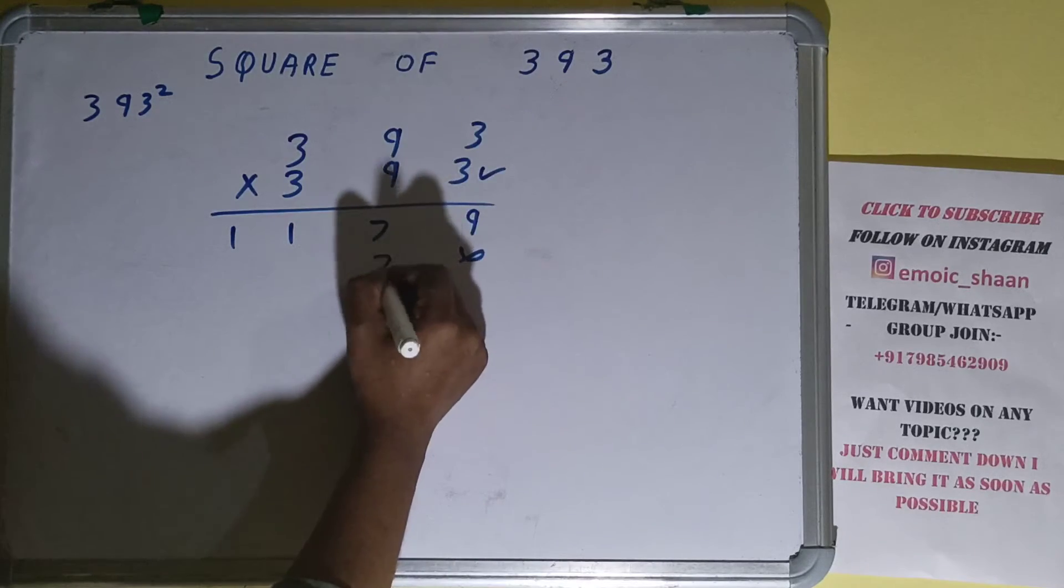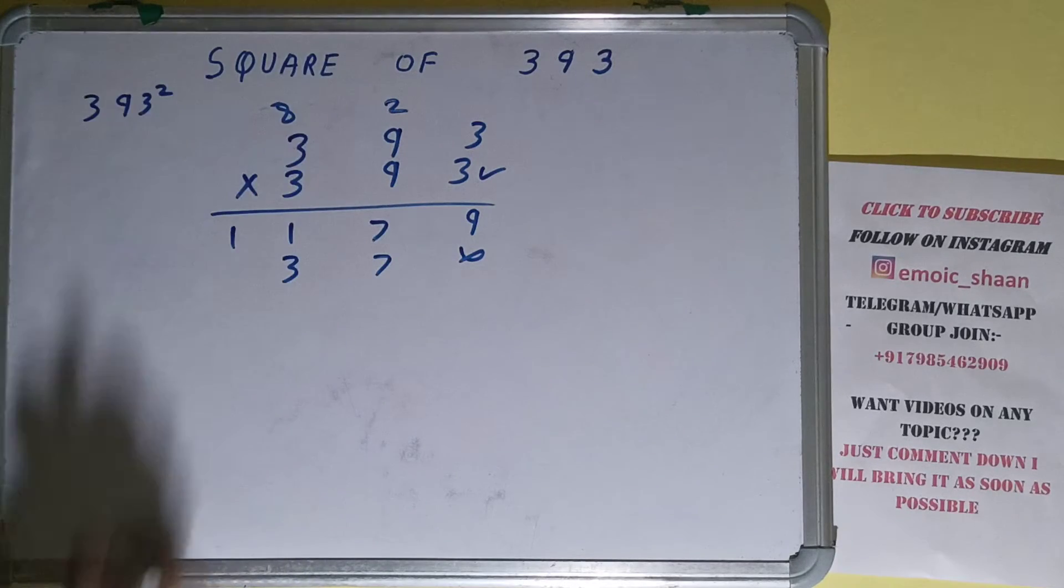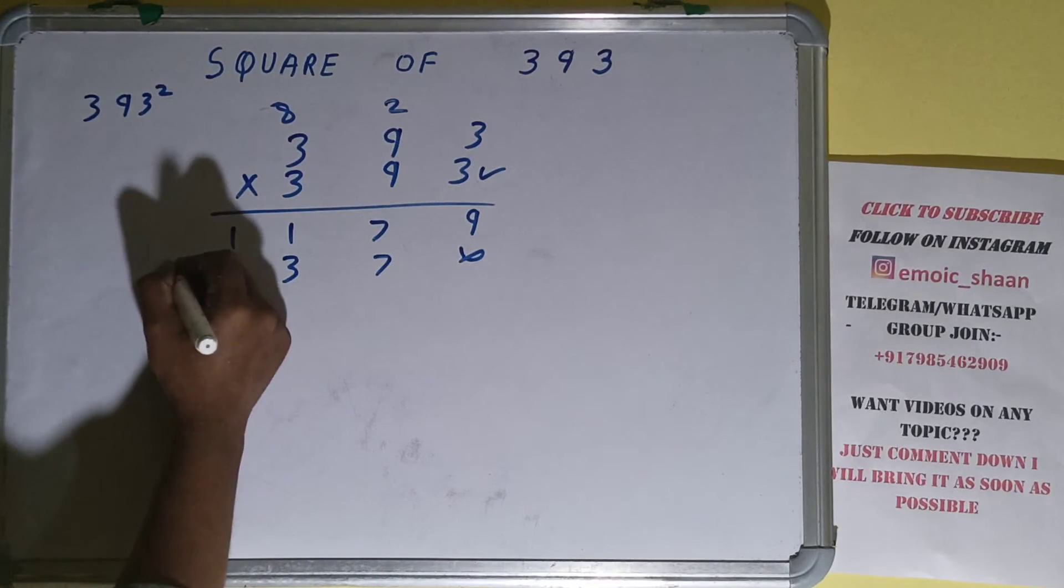Now this 9. 9 times 3 is 27, 2 carry. 9 times 9 is 81 plus 2 is 83, 8 carry. 9 times 3 is 27 plus 8 is 35.